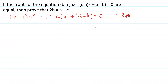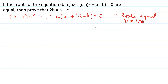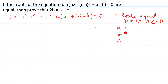Since the roots are equal, the discriminant — the one that determines the nature of roots — is given by the formula b squared minus 4ac, and that would be equal to 0. So let us identify our a, b, and c. The first step: our a is the coefficient of x squared, so it is (b minus c).